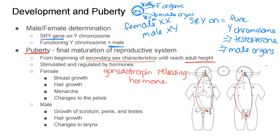In females, secondary sex characteristics include increased breast growth, hair growth in the underarms and groin area, menarche — starting to have a period or cycle — and changes to the female pelvis changing the size of the pelvic outlet, all getting ready to house or birth a baby. In males, secondary sex characteristics include growth of the scrotum, penis, and testes; pubic and underarm hair growth; more facial hair; and changes in the larynx and voice box, which is why male voices usually change and deepen.